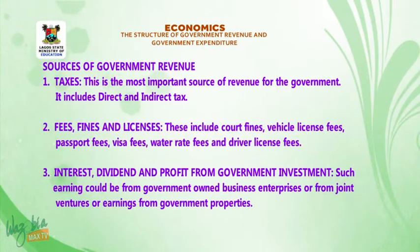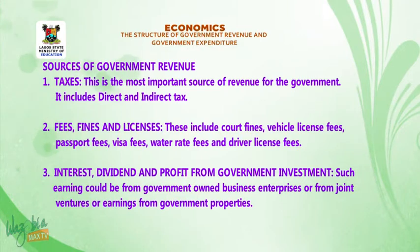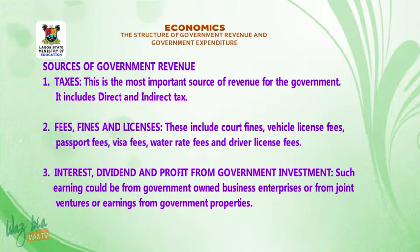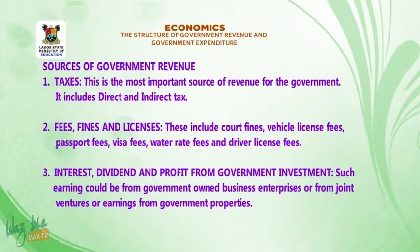Sources of government revenue: 1. Taxes — the most important source of revenue for the government, including direct and indirect tax. 2. Fees, fines and licenses — this includes court fines, vehicle license fee, passport fees, visa fees, water rate fees, and driver license fees.